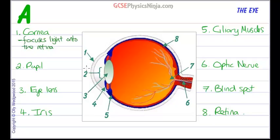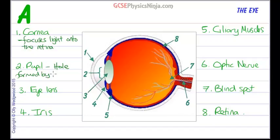Number 2, the pupil, is the hole in the centre of the eye and the size of the hole is controlled by the iris. The hole will let more light in or less light in depending on the lighting conditions. So the pupil is a hole formed by the iris to let light in.